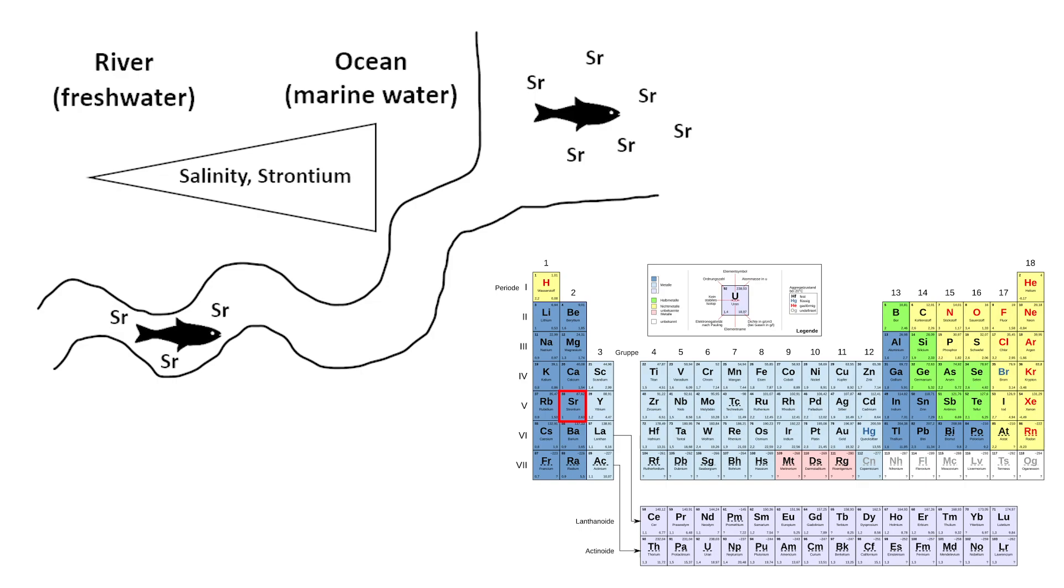Absolute strontium concentration positively correlates with salinity. This means the higher the salinity, the more strontium. Therefore stream water has low absolute strontium concentrations and marine water shows high strontium values.